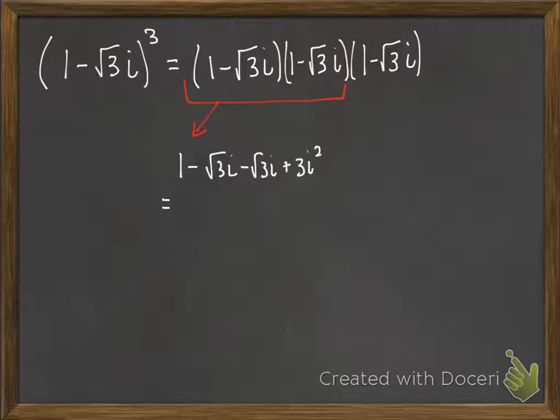And then we simplify a little bit. Since we have a negative square root of 3i and a negative square root of 3i, we really have two of those. And then remember that i squared is negative 1, so that 3 plus 3i squared becomes minus 3. Finally, we have negative 2 minus 2 square roots of 3i.